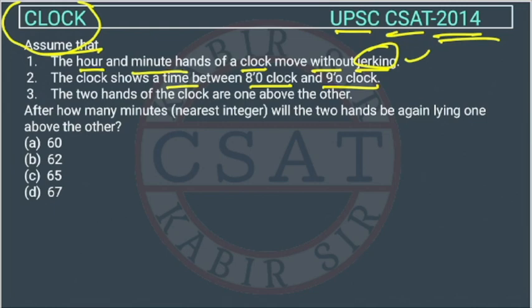Third condition: the two hands of a clock are one above the other, which means they are coinciding. They are not separate from each other.